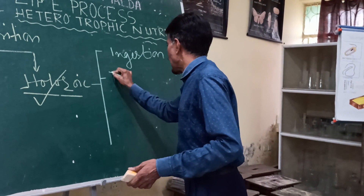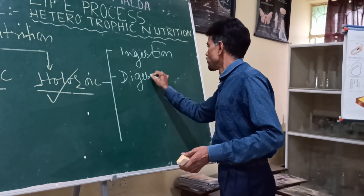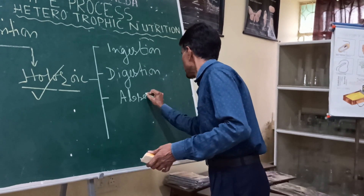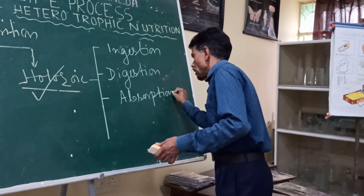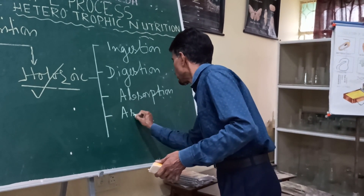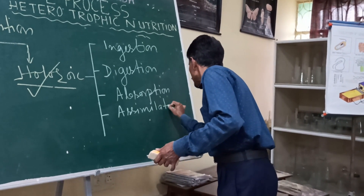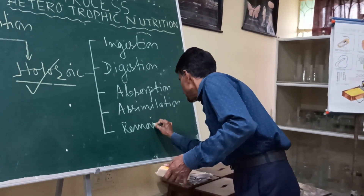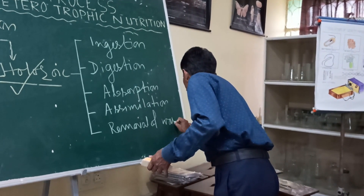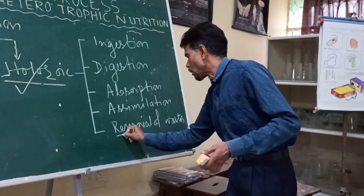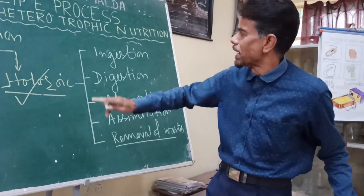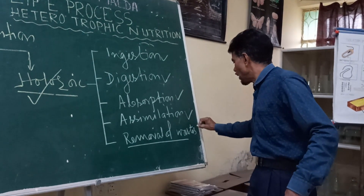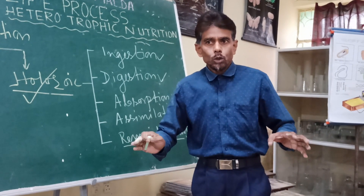The five steps of holozoic mode of nutrition are: number one — ingestion; number two — digestion; number three — absorption; number four — assimilation; and number five — egestion (removal of waste). We human beings also follow these same steps in our mode of nutrition.